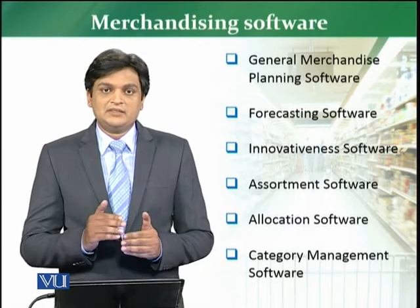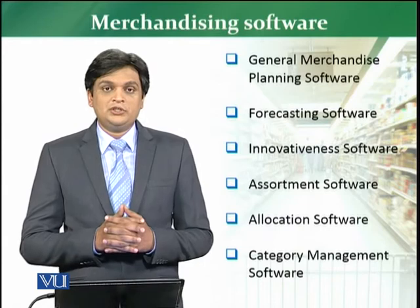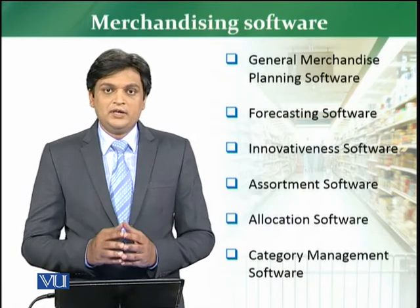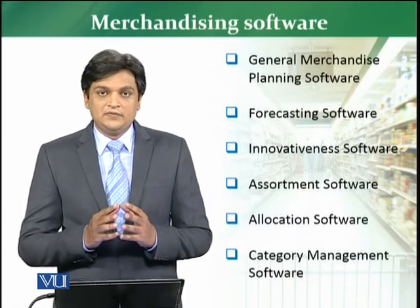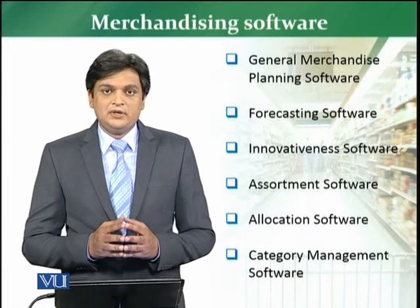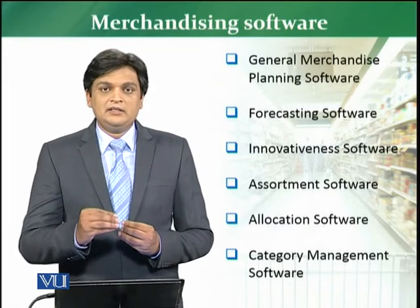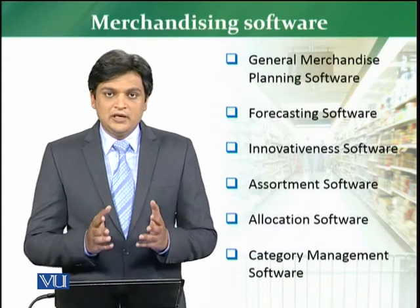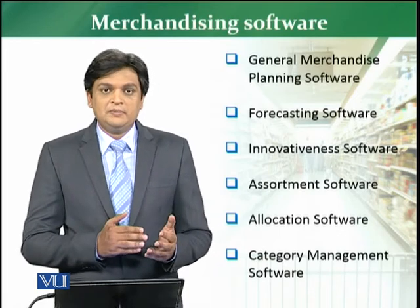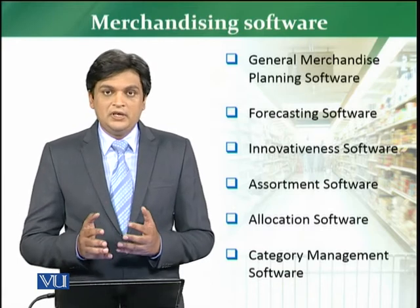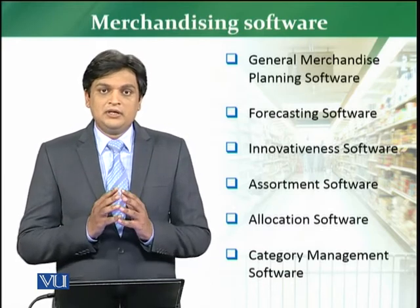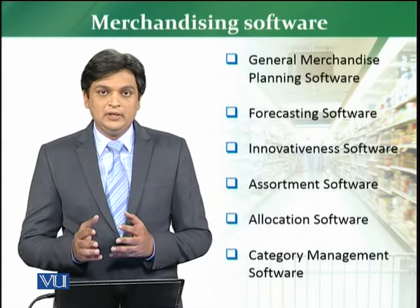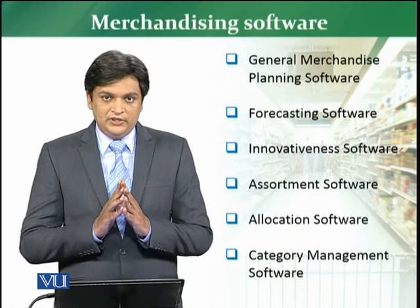Then we have allocation software. Allocation software defines where a particular product is physically located in the store. For example, if a customer is looking for Dalda cooking oil, the system tells you where the product is located. This software helps a retailer to properly locate and allocate all products in the system, and also helps during inventory stock-takes — whether partial or annual — allocating products efficiently without wasting time.